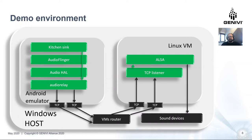Here we have the demo environment that I will be using for demonstration purposes. It's deployed on a laptop PC that has a Windows host, and the Windows host is running the Android emulator with all the JNEV components. In parallel there is a Linux virtual machine — actually an Ubuntu virtual machine — that has some TCP servers configured. Those TCP servers are reading from the TCP sockets and passing the data to the ALSA device in order to play it, and also providing visual feedback via volume meters to show what is actually being played.